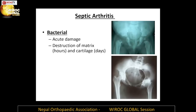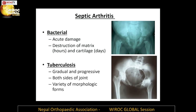So with sepsis, there is acute damage and the destruction of matrix and cartilage occurs within hours and days, so this is definitely an emergency. When we consider tuberculosis, which is ubiquitous in our environment, it is more gradual and progressive and both sides of the joint seem to be involved.